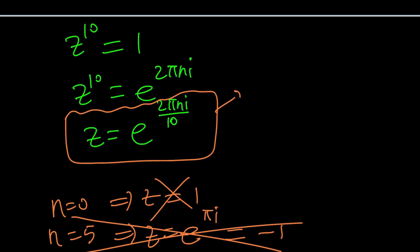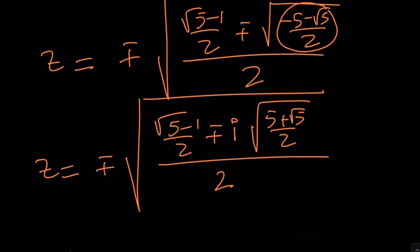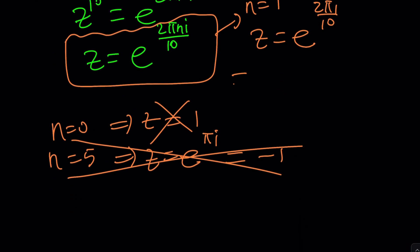And for example, if n is equal to one, z is going to be e^(2πi/10). But wait a minute. How is this the same as the square root of the square root of something? Isn't that crazy? Yes. Because if you think about it, thanks to Euler again, this is the same as cos(2π/10), which is 18 degrees, by the way. I mean, sorry, 36, plus i times sin(2π/10). Of course, there are more roots, seven more, which you're going to find. Because it's left as an exercise for you.